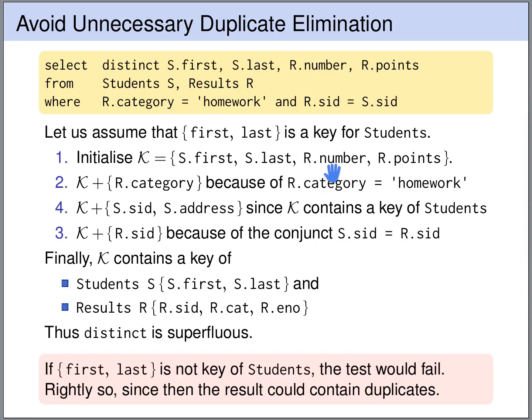If first and last name is not a key of the students table, then the conclusion will be different — and rightly so — because then DISTINCT does change the outcome.